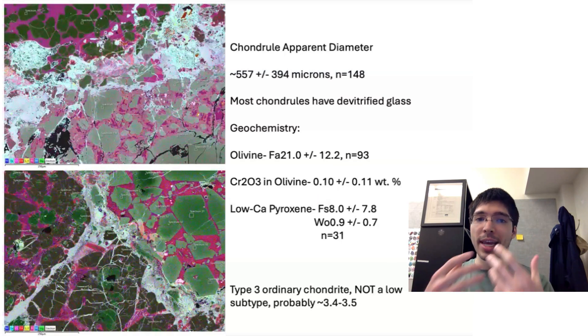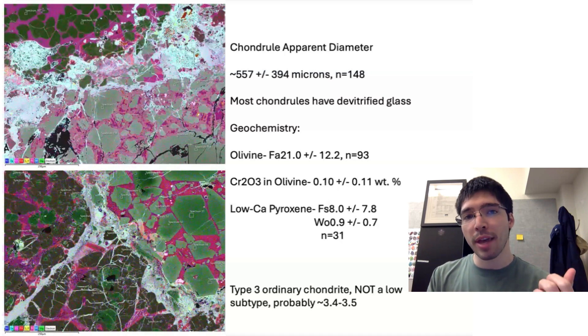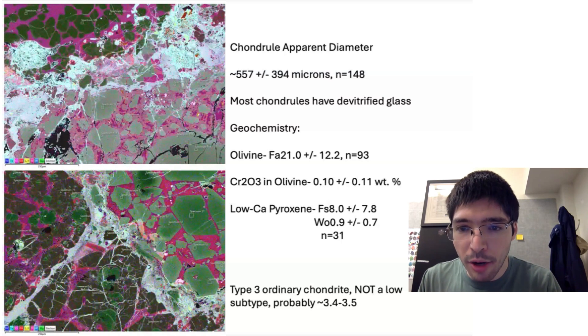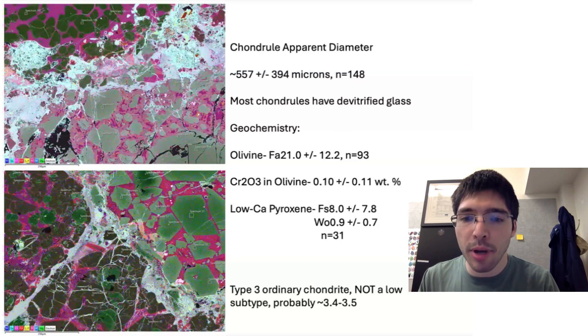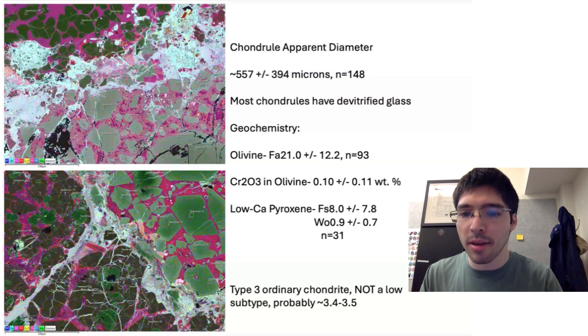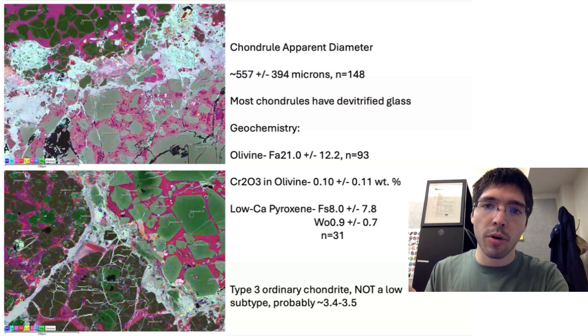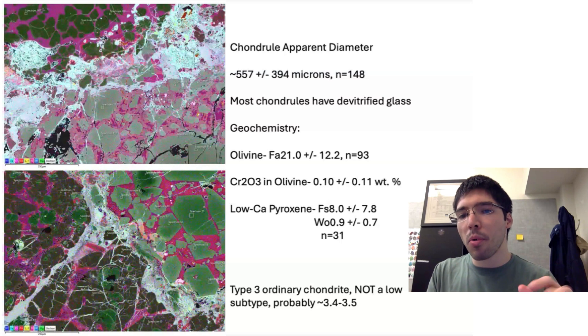What's very important when you're doing a subtyping is you have to look at the distribution of one particular element in olivine called chromium. Chromium is a very sensitive indicator of thermal metamorphism when you start heating up the sample and you go from a 3.00 to a 3.15. That's because as you do that, as you start heating up a very primitive sample, the chromium in the olivine migrates and forms a new mineral phase called chromite. That's an oxide phase. When you look right here, you'll see that I've got about 0.1 weight percent of what's called Cr2O3. It's just chromium reported in what's called oxide weight percent. That's just how geochemists report this. This value is lower than what you'd expect for a low subtype ordinary chondrite.